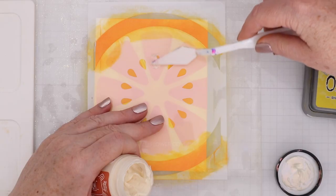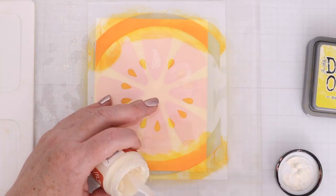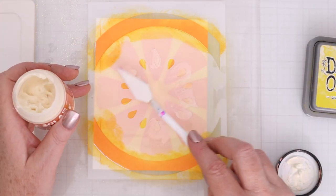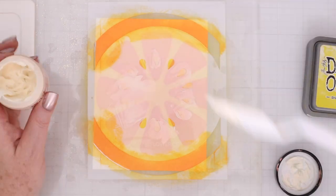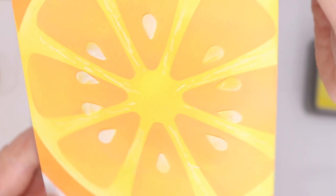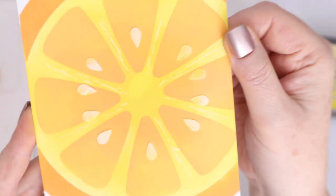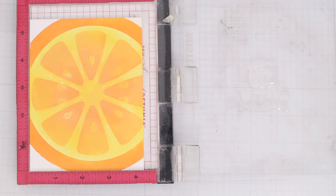Finally for the seeds I'm using Simon Hurley's Solar Paste and I'm using a palette knife to cover up the seeds with the Solar Paste. Solar Paste looks white when it's wet but it will dry in a more translucent way and you'll see the seeds will look like they're inside the orange. Check that out.